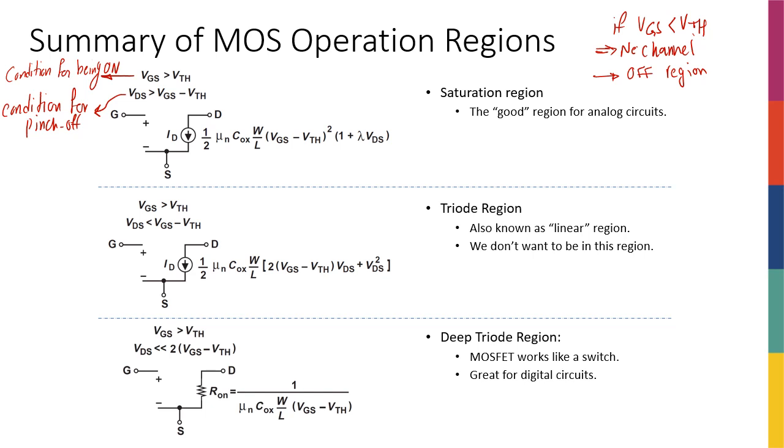I know that my transistor is going to work like a voltage-dependent current source. This is the large signal model of my transistor. Whatever voltage I apply across the gate source is going to be used in this quadratic form of equation and generate my current. The current flowing from drain to source is going to be half mu_n C_ox W over L times (VGS minus VTH) squared.